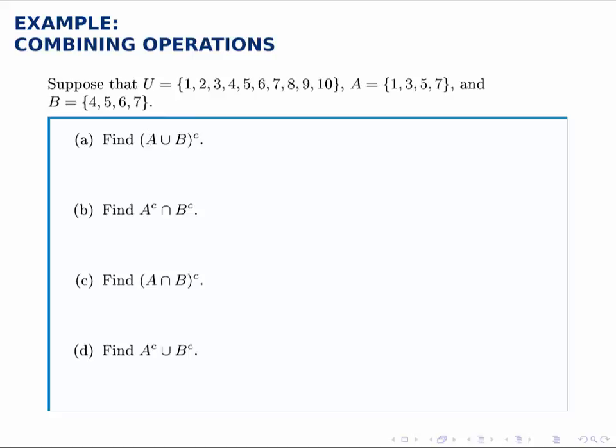In the first one, inside parentheses we have A union B, and then we take the complement. So that tells us our order of operations. First, we'll take the union, and then we'll find the complement of that resulting set.